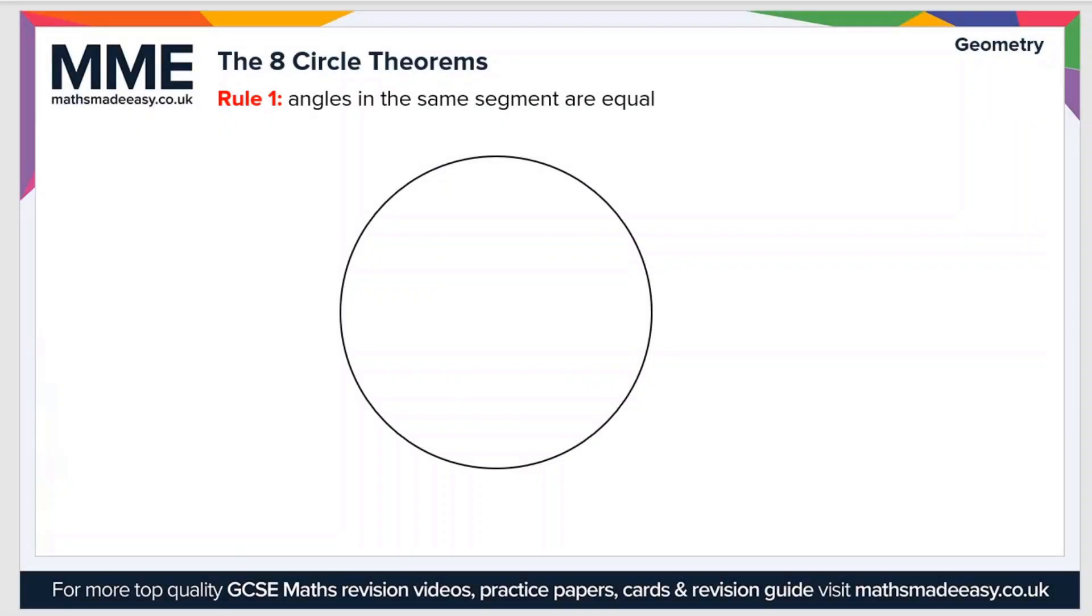Welcome to the Maths Made Easy tutorial on the eight circle theorems. There are eight in total. We'll cover four in this video and four in a separate video. Let's jump right into it. Rule number one is that angles in the same segment are equal.